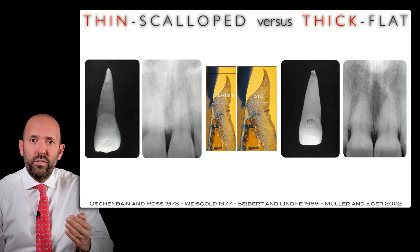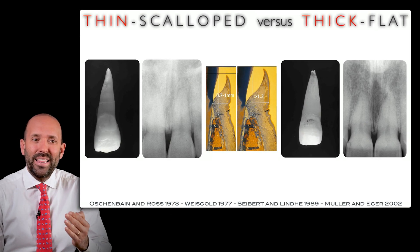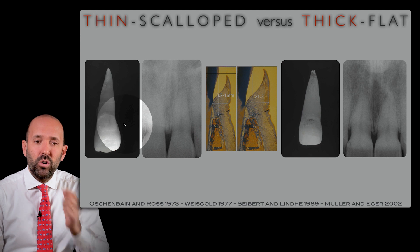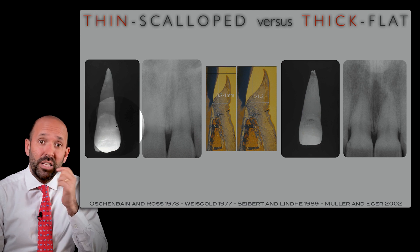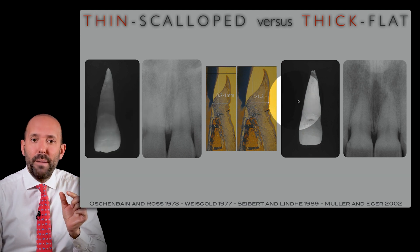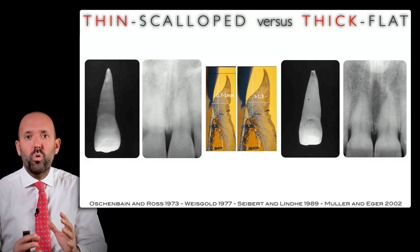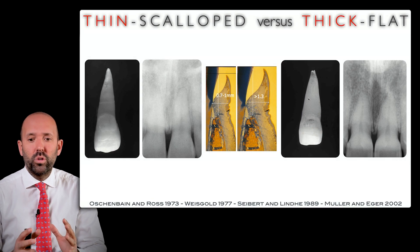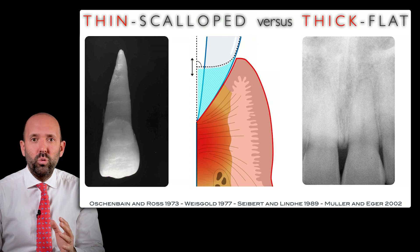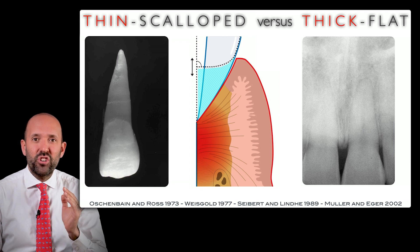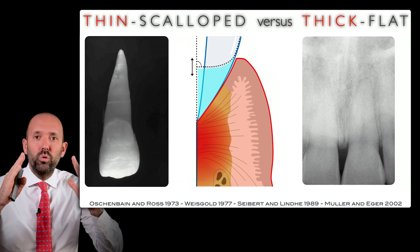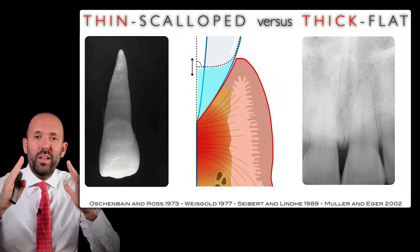This is continuous subgingival — a triangular crown is normally also associated with a triangular root, while a more square crown is associated with a more square root. So basically, when I prepare a tooth that has thin tissue, I check the x-ray and find out that the root is more triangular.